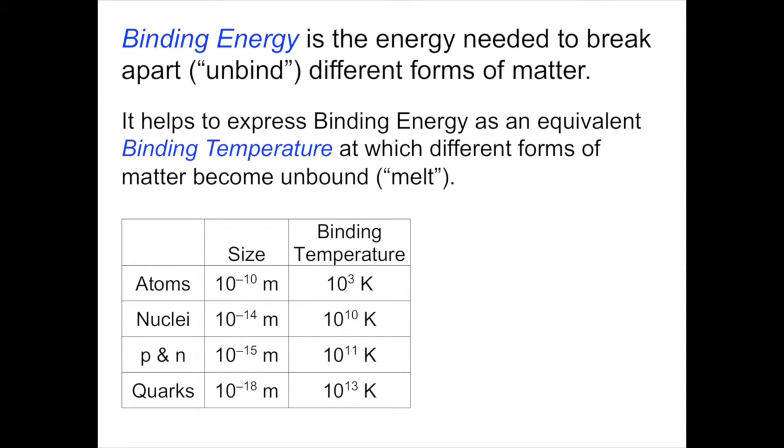For example, when we talked about the cosmic microwave background, the universe became transparent when the temperature dropped below about 3,000 degrees Kelvin, and electrons could then combine onto hydrogen nuclei, and the universe suddenly became transparent. This number for the binding temperature that I'm going to use is a round number temperature.